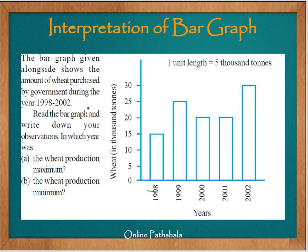The bar graph shown here displays the amount of wheat purchased by the government during the years 1998 to 2002. The first question is: in which year was the wheat production maximum? Just by seeing the length of the bar, it is easy to say that the wheat production was maximum in the year 2002.